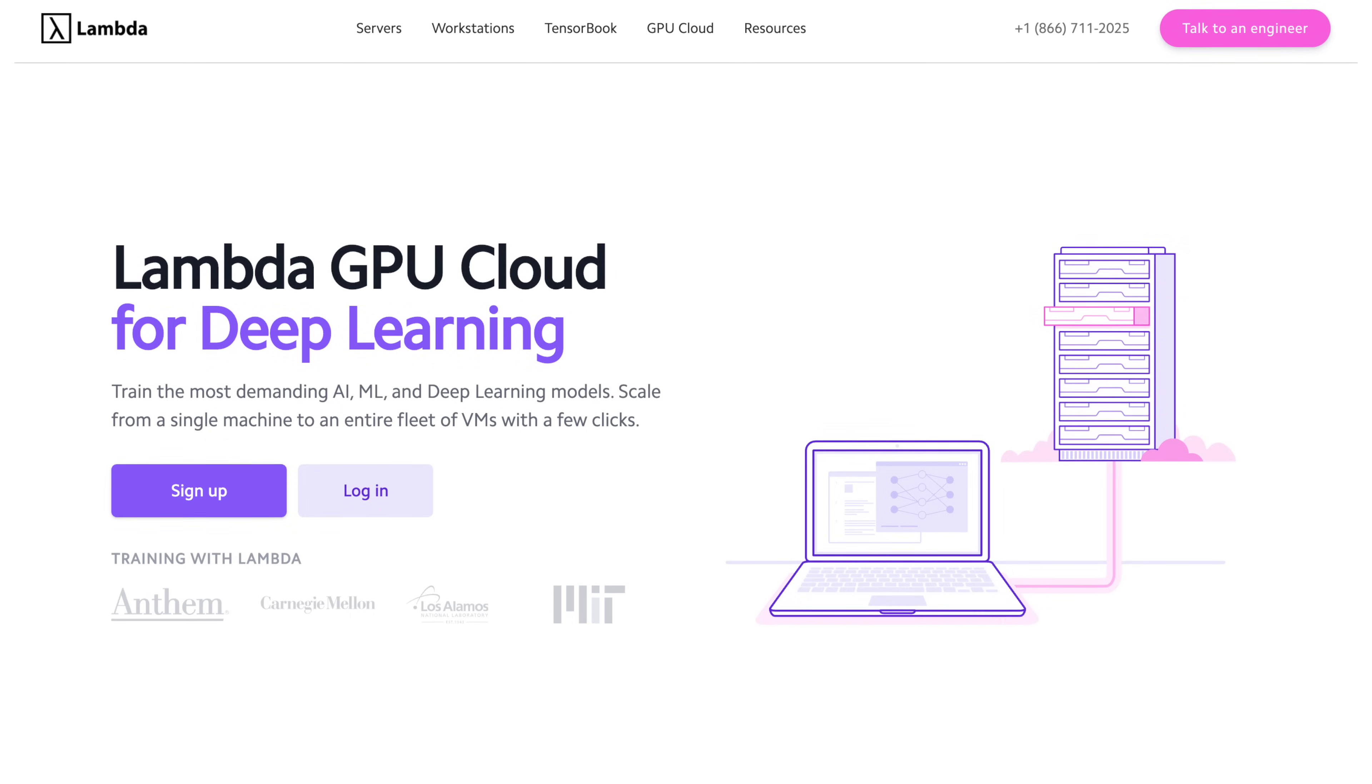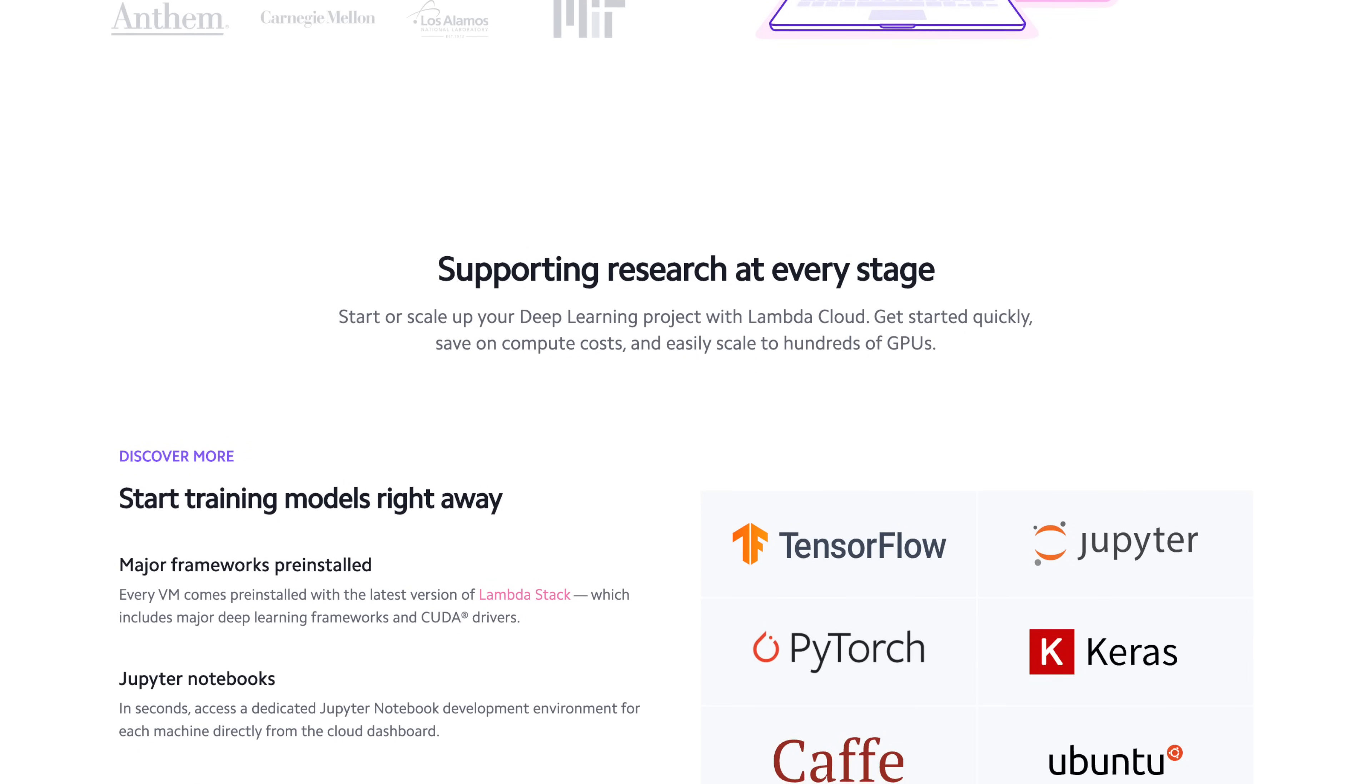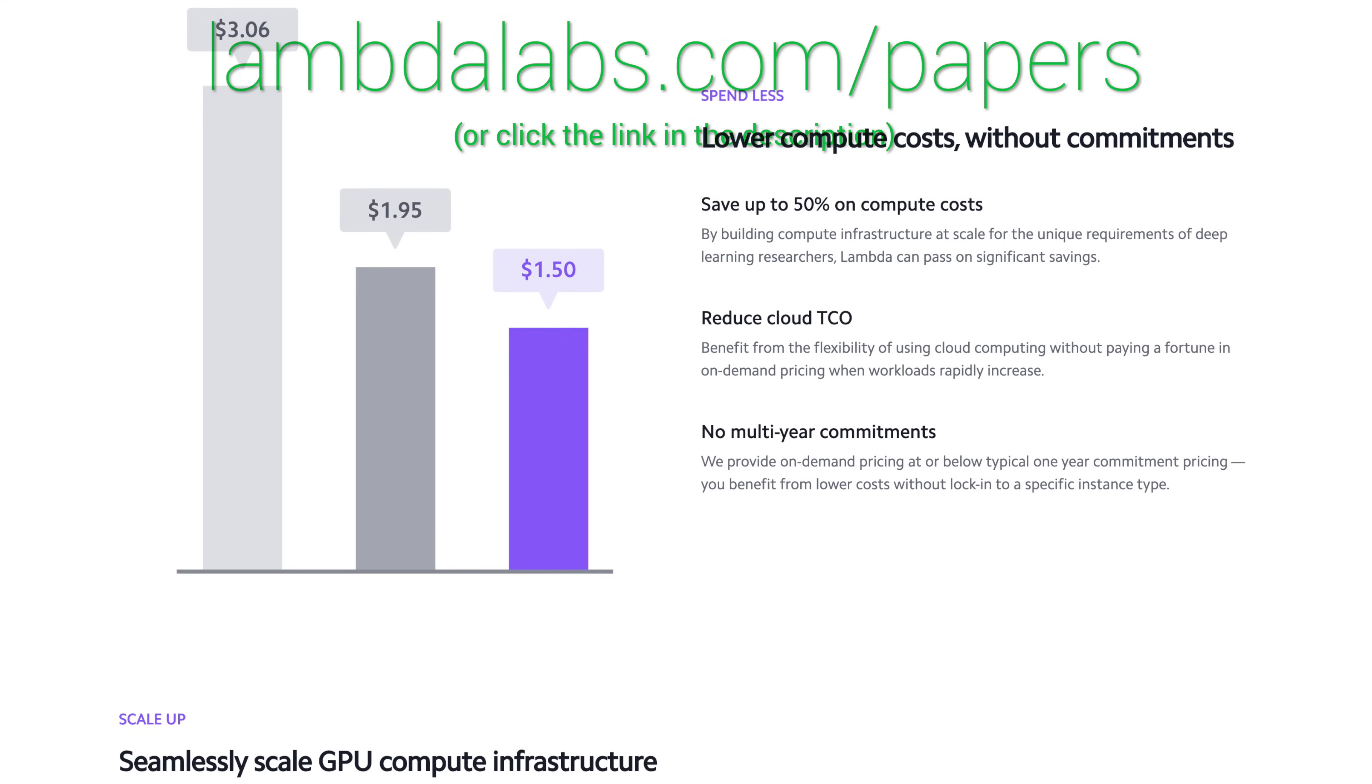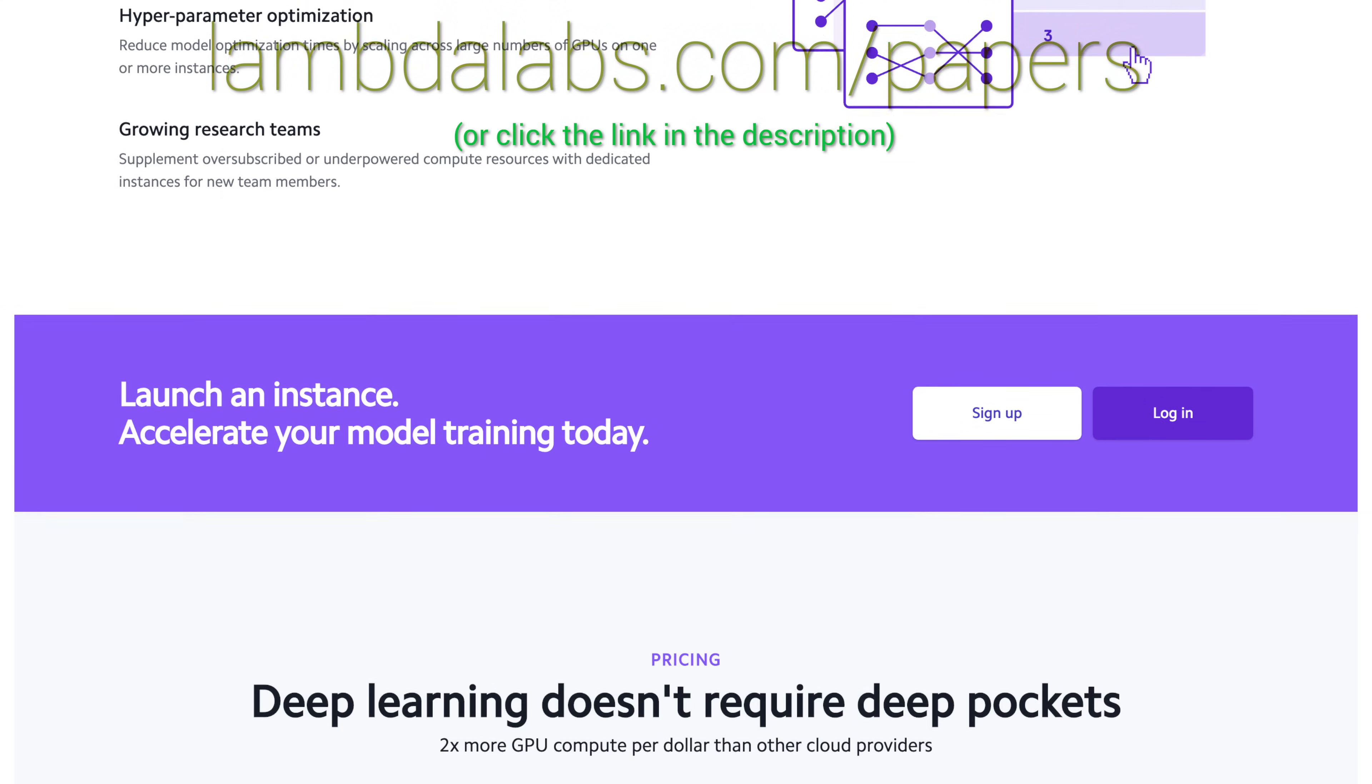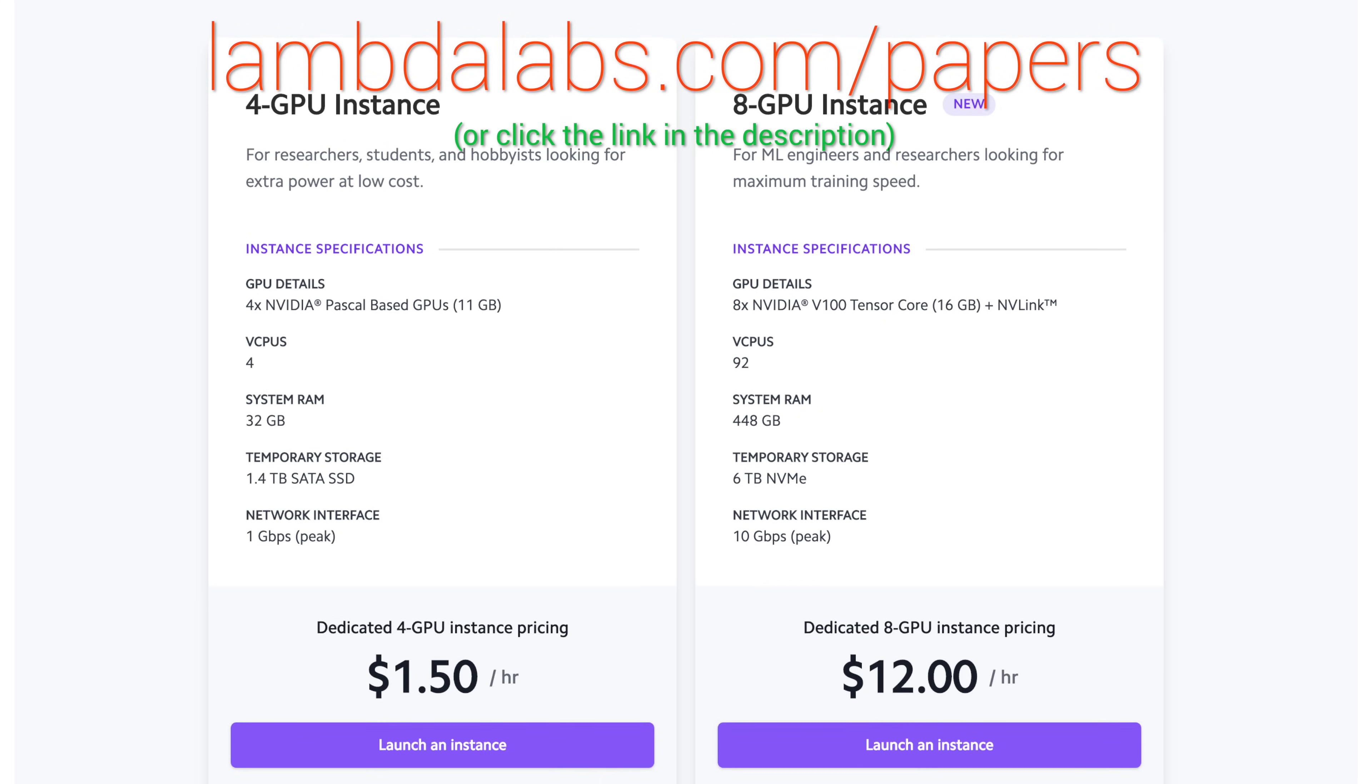This episode has been supported by Lambda. If you are a researcher or a startup looking for cheap GPU compute to run these algorithms, check out Lambda GPU Cloud. I've talked about Lambda's GPU workstations in other videos, and I'm happy to tell you that they are offering GPU cloud services as well. The Lambda GPU Cloud can train ImageNet to 93% accuracy for less than $19. Lambda's web-based IDE lets you easily access your instance right in your browser. And finally, hold onto your papers because the Lambda GPU Cloud costs less than half of AWS and Azure. Make sure to go to lambdalabs.com/papers and sign up for one of their amazing GPU instances today.